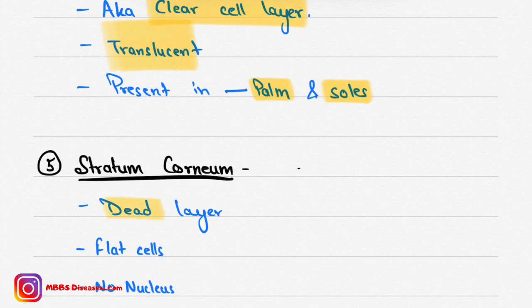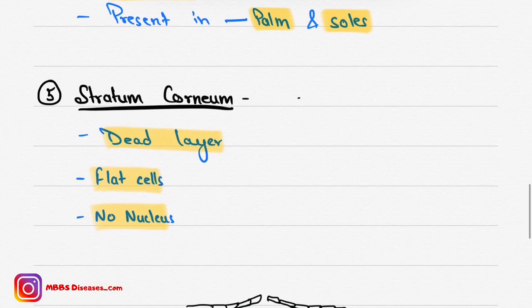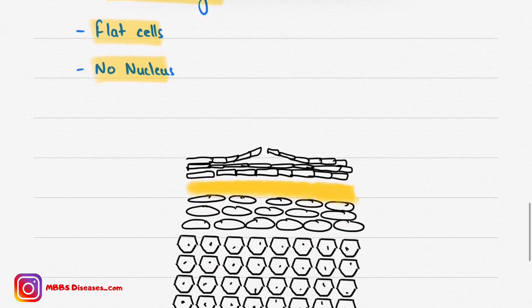The topmost layer is stratum corneum. It contains dead keratinocytes and is also known as the dead layer. The cells here are flat, have no nucleus, and lack mitotic activity — they cannot divide.